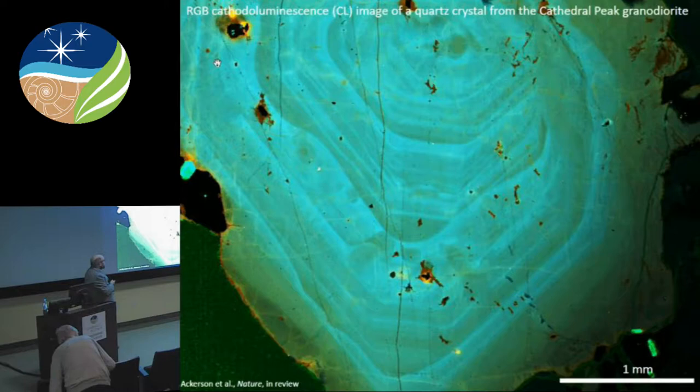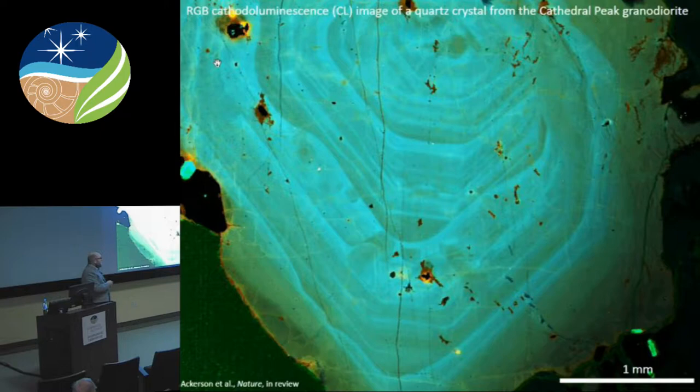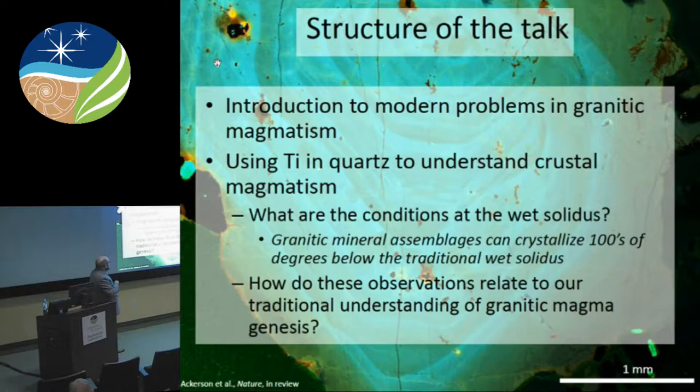This is a cathodoluminescence image of a quartz crystal from Yosemite National Park. The variations in blue intensity in the quartz crystal are variations in the concentration of titanium, and you can envision that this crystal may have grown from this interior core region outward toward the rim. Today I'm going to focus on using these variations in titanium concentration to determine how these granites form, and hopefully convince you that they formed at really low temperatures. I'll start with a little introduction to modern problems in granites.